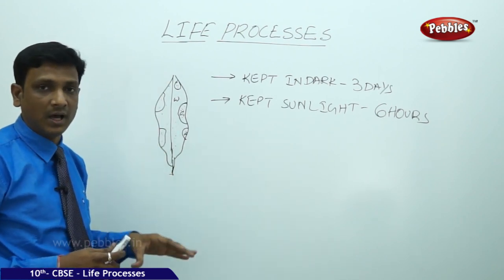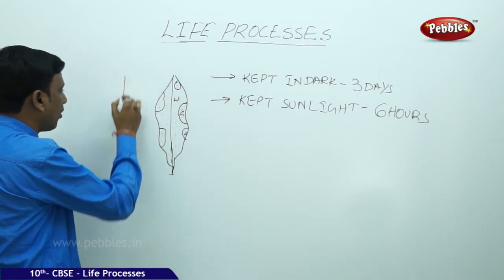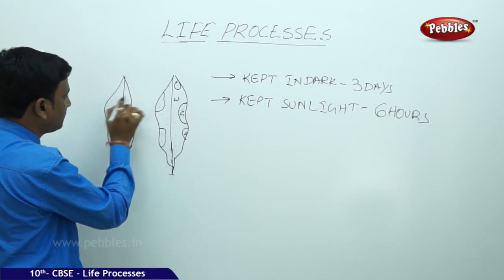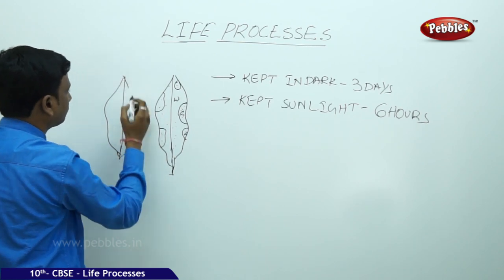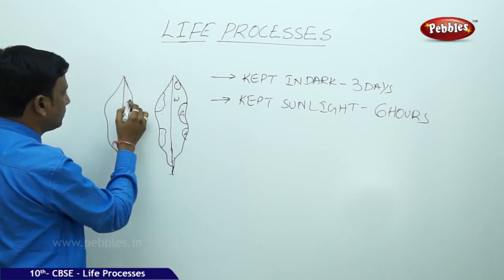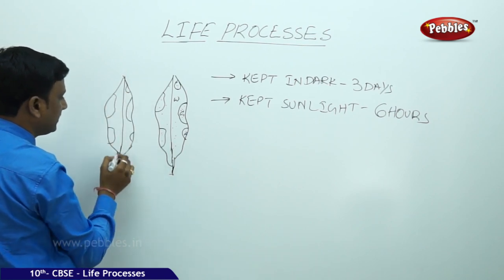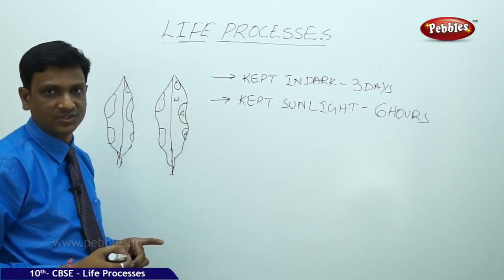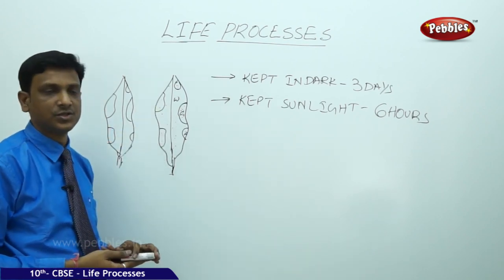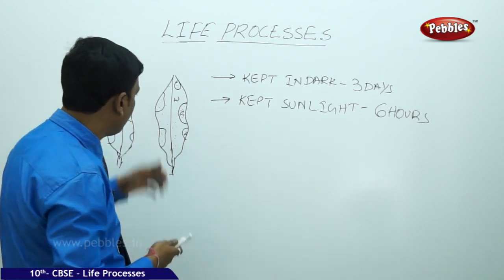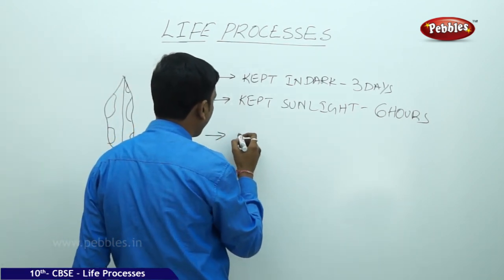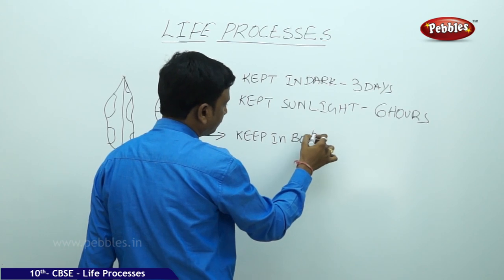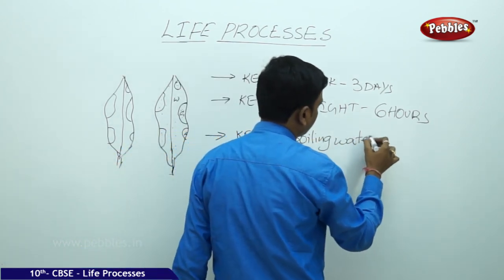We trace this leaf — making a copy of it for further reference, so we can later identify where color changes happened and where the green patches were located. Now we are going to test this leaf for the presence of starch to find out where photosynthesis took place. To do that, first we boil the leaf in water for a few minutes.